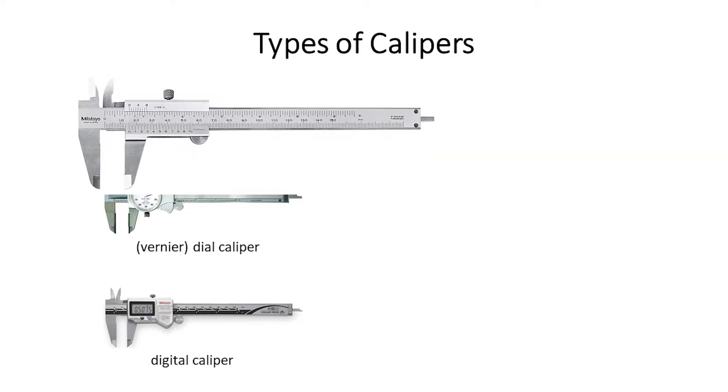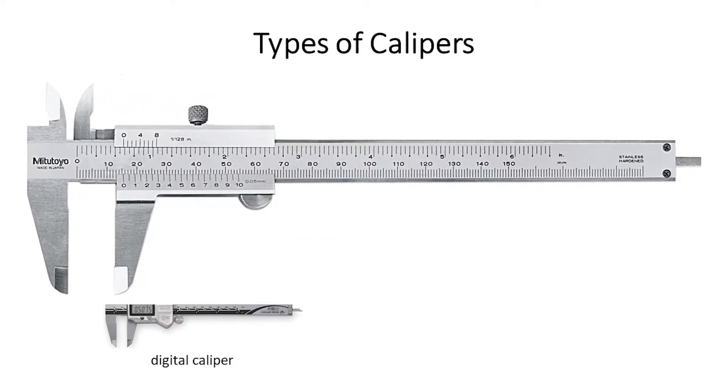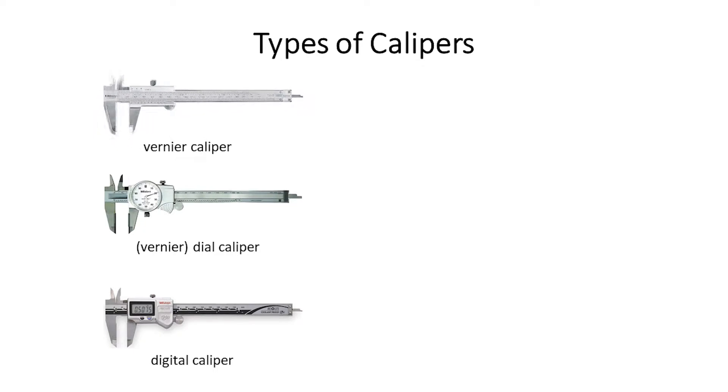Vernier calipers are so named because they possess a small movable graduated scale that allows us to piece together the overall reading shown on the calipers. The main benefit to Vernier calipers is that they are the most affordable among the three types, and they are also the most reliable because they only depend on one moving part and do not require batteries. The primary downside is that they take longer to read.